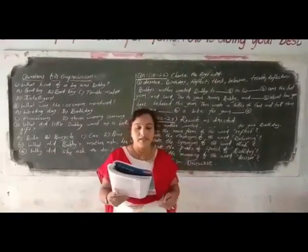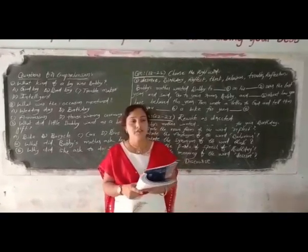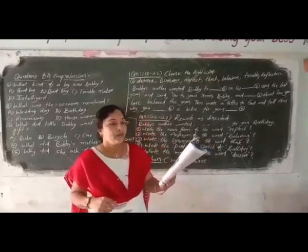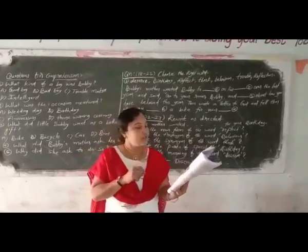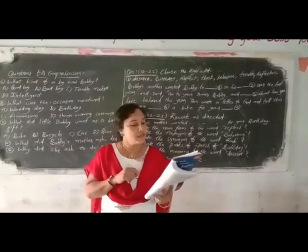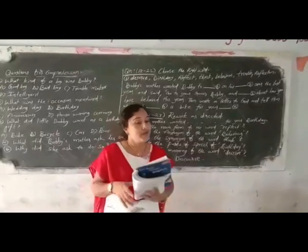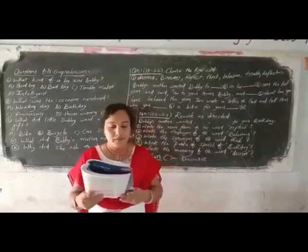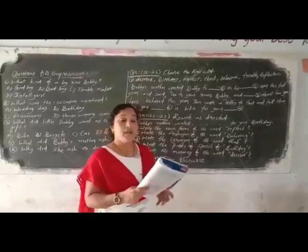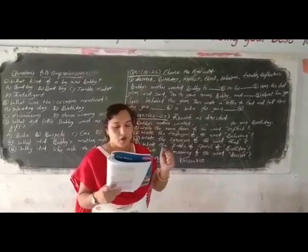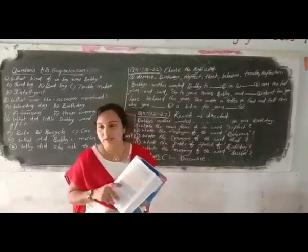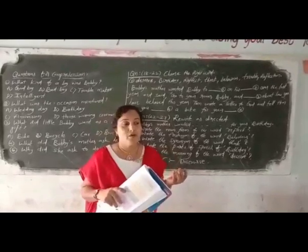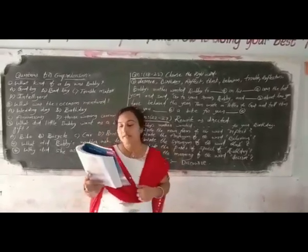And the second passage: 'Little Bobby of course thought he did.' In this second passage, what are the questions given? Who asked Bobby to write a letter? Who did Bobby address in his letter? That means to whom is he going to write the letter?